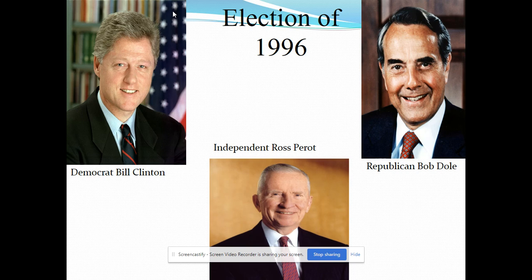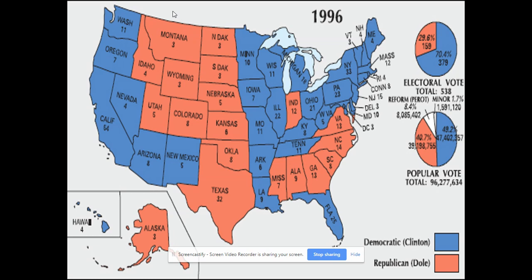In the election of 1996, Clinton ran against Republican Bob Dole, a World War II veteran. Ross Perot ran again but didn't win as many popular votes as in 1992, though he still took some votes from the Republicans. Clinton won in 1996 with just over 49 percent of the popular vote, compared to about 47 percent in 1992 — slightly higher because Ross Perot did not perform as well.